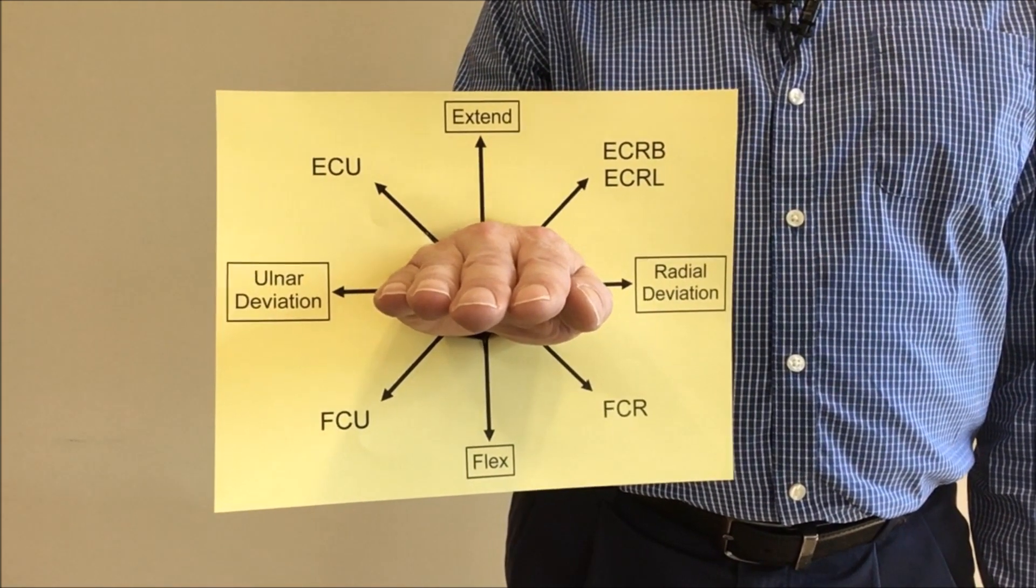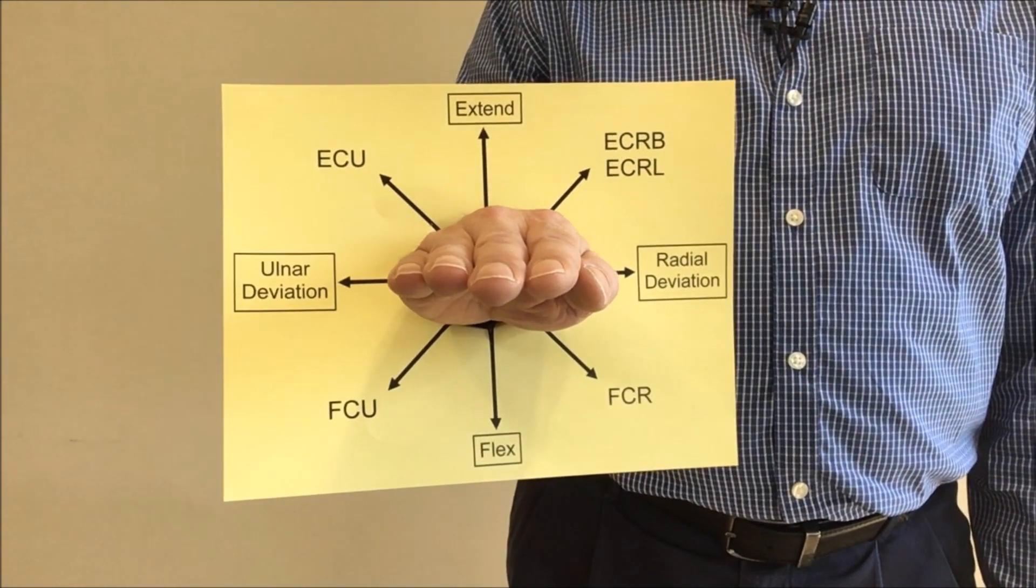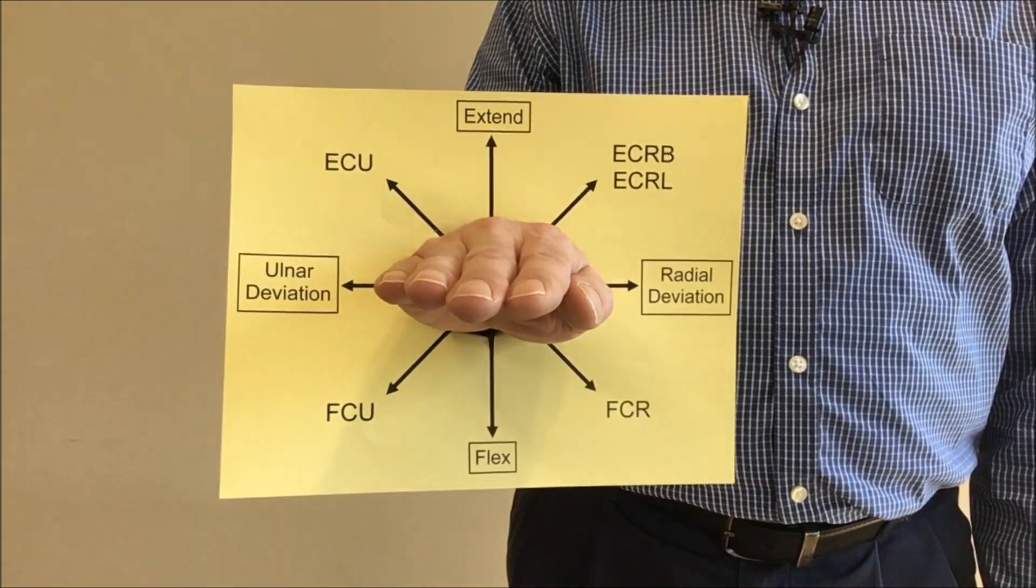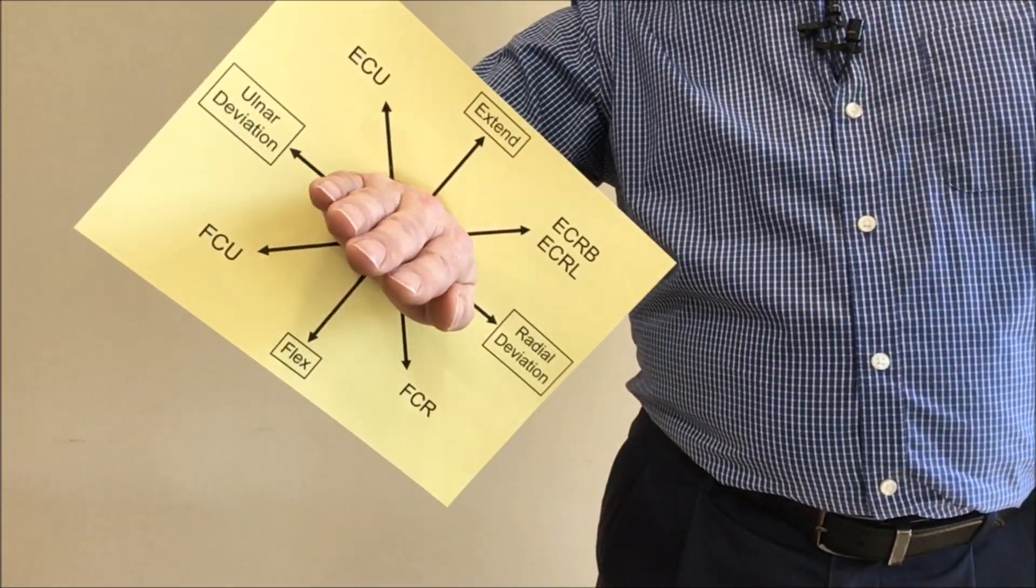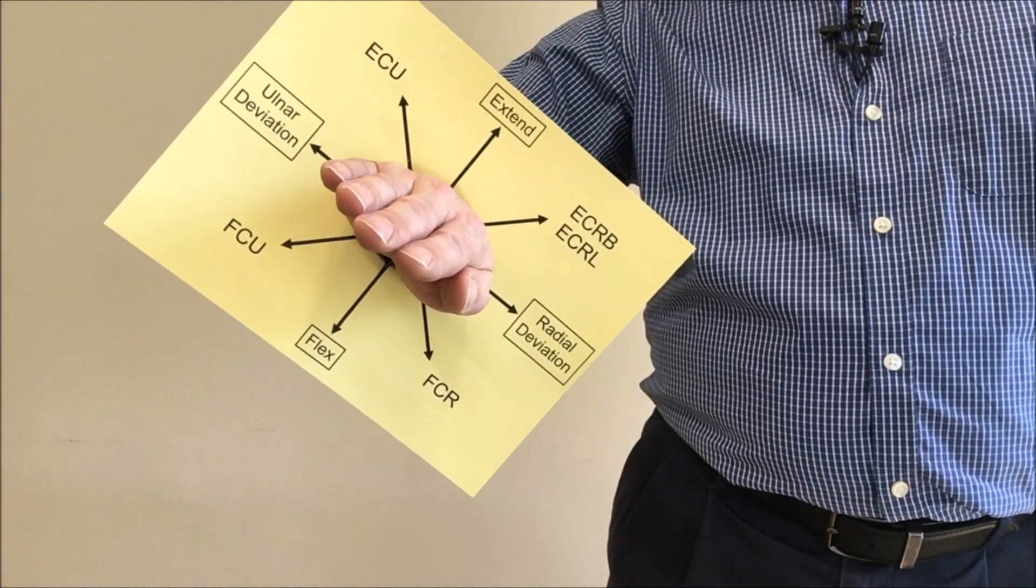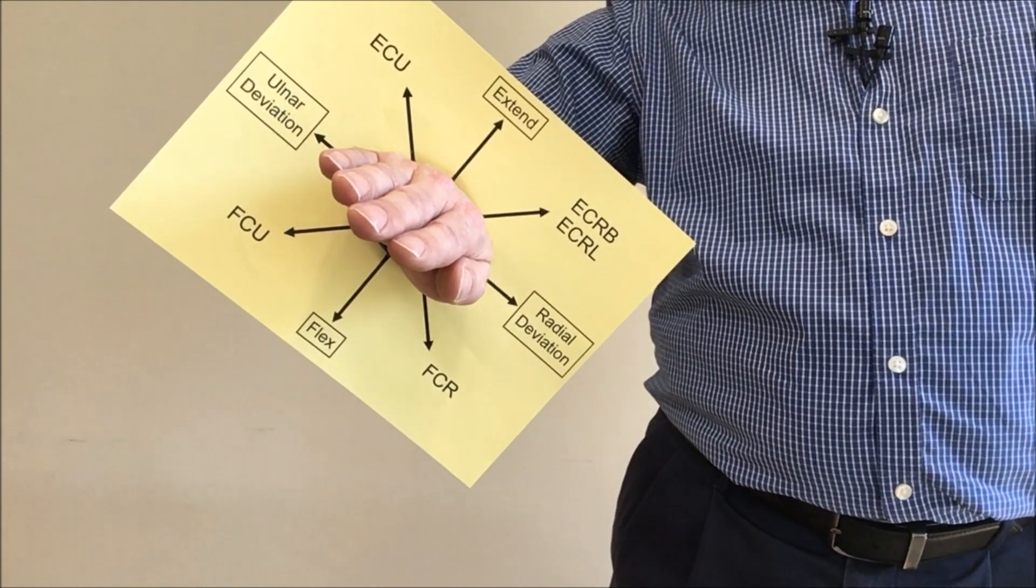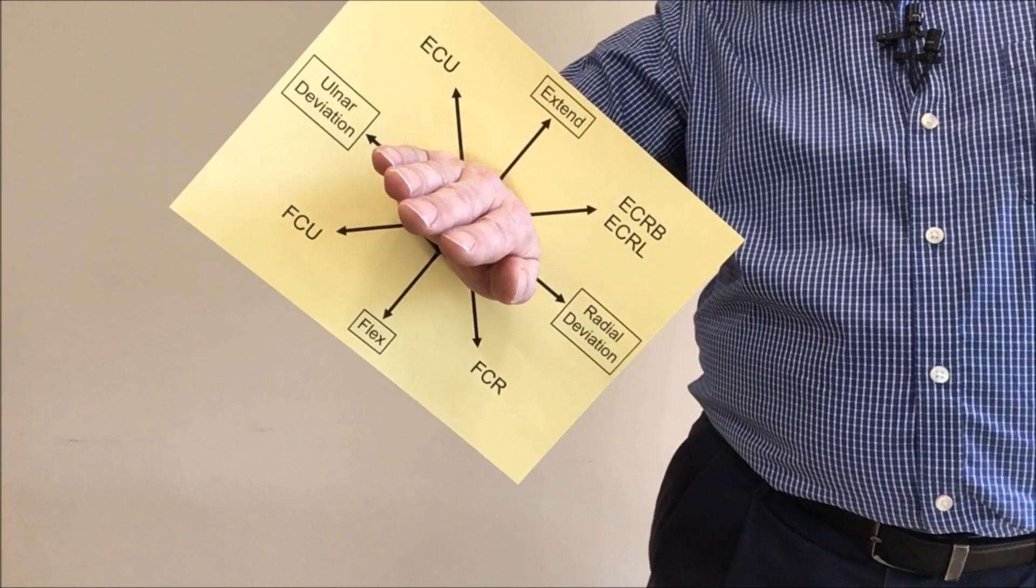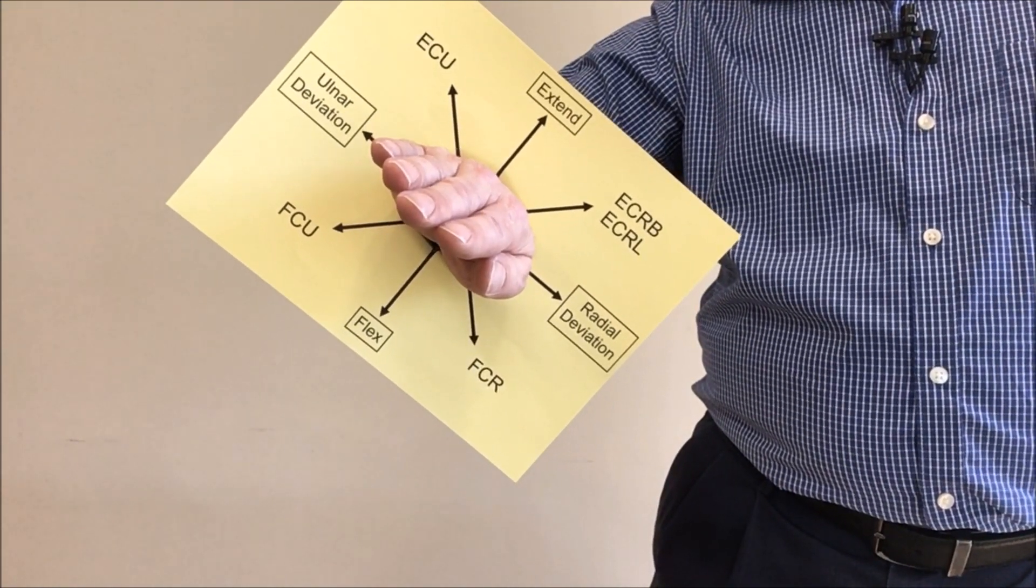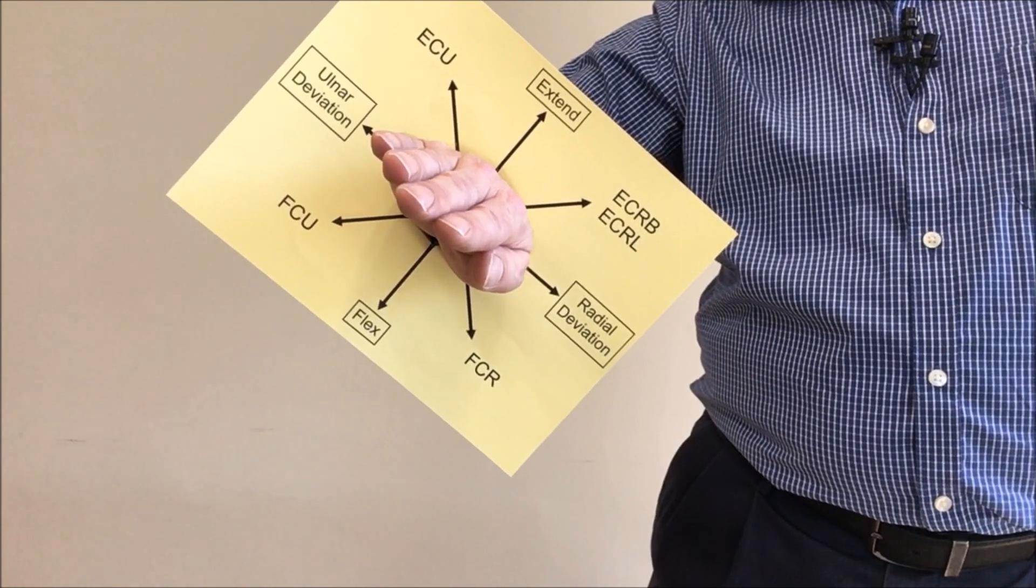Another way to get the motions for these individual wrist muscles parallel to the floor would be to abduct the glenohumeral joint and now you can see with my glenohumeral joint abducted to 45 degrees and my forearm pronated that FCU and ECRB and ECRL, those motions are now parallel to the floor.